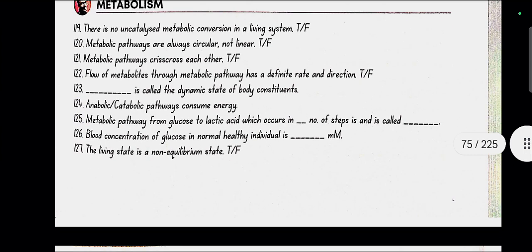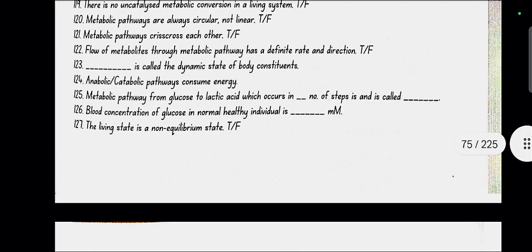There is no uncatalyzed metabolic conversion in living system. Yes, true. Metabolic pathways are always circular, not linear. False. They can be both circular or linear. Metabolic pathways criss-cross each other. Yes, true. Flow of metabolites to metabolic pathway has a definite rate and direction. Metabolite flow is called the dynamic state of body constituents. Anabolic pathways consume energy.